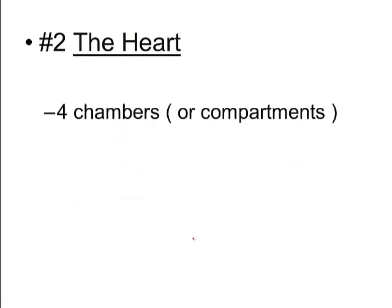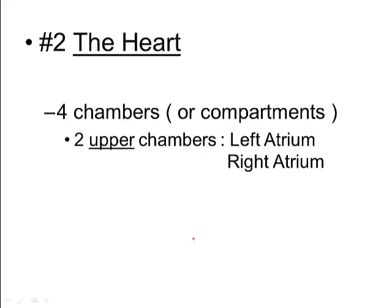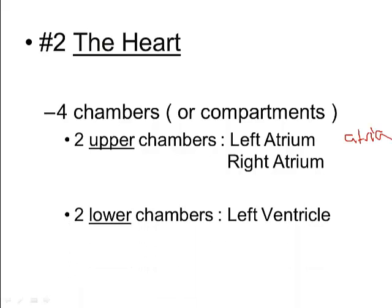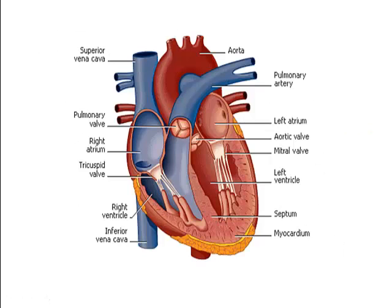The second structure we're going to talk about is the heart. The heart has four chambers or compartments. There are two upper chambers called the atria — a left atrium and a right atrium. The lower chambers are a left ventricle and a right ventricle. Blood flows through these different chambers in a very distinct way, always going in one direction.